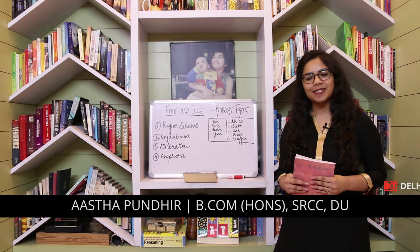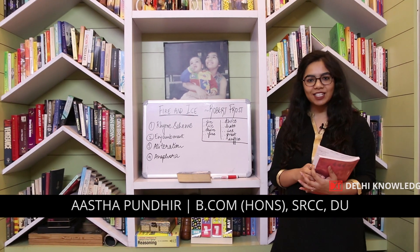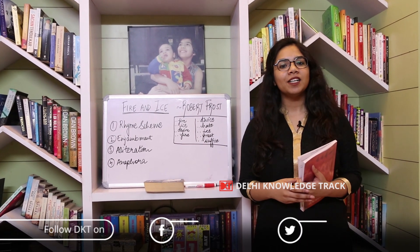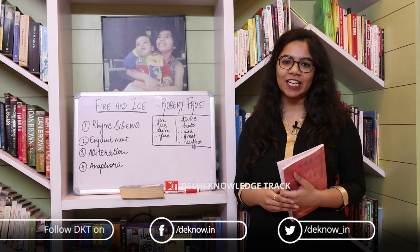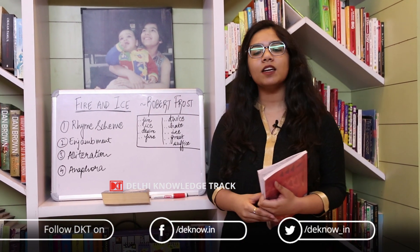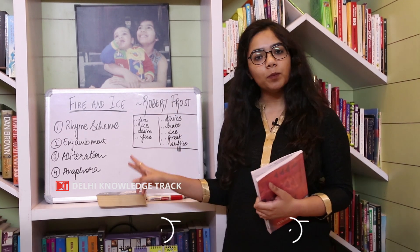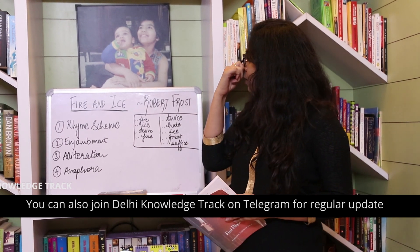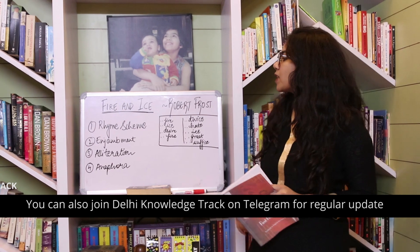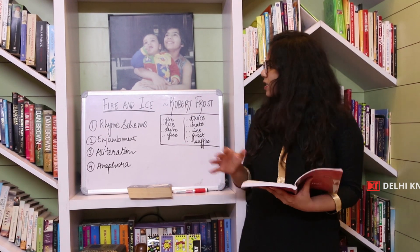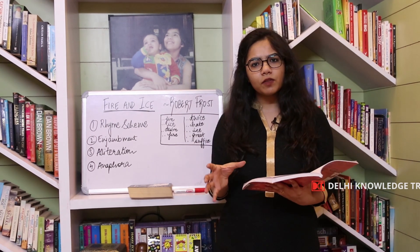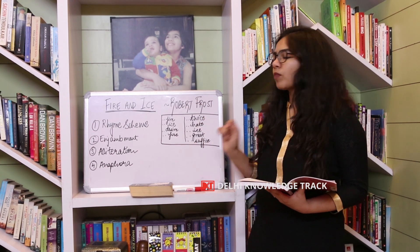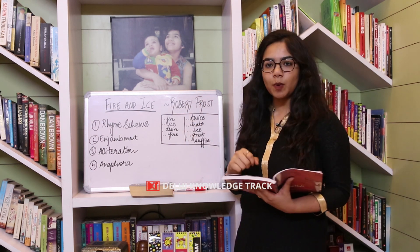Hello everyone, my name is Aastha and in this initiative of DKT — donate your time to nation building — I am studying CBSE Class 10th English. This is the second poem from the third chapter of the book First Flight. The poem is titled 'Fire and Ice' and the poet is Robert Frost. First I'll read out the poem, give a little overview of its meaning, and then we will go over the literary devices used in the poem.